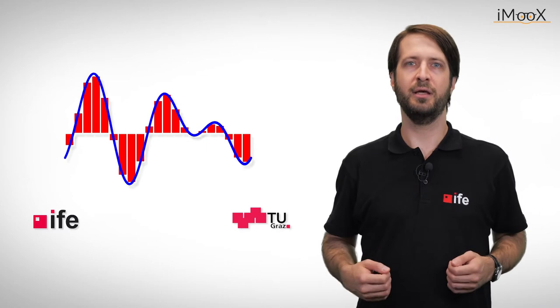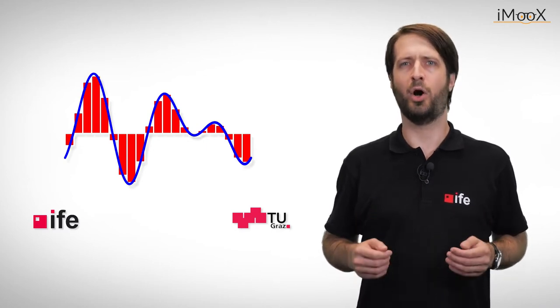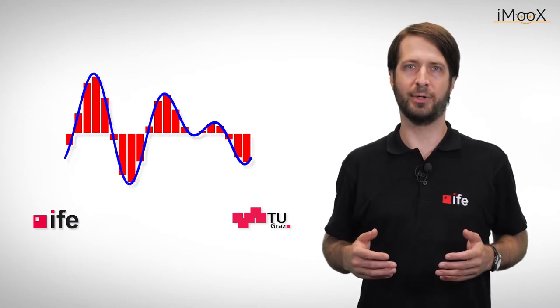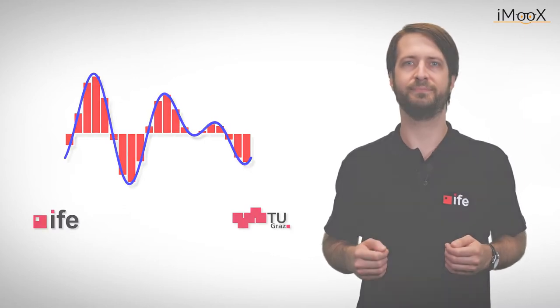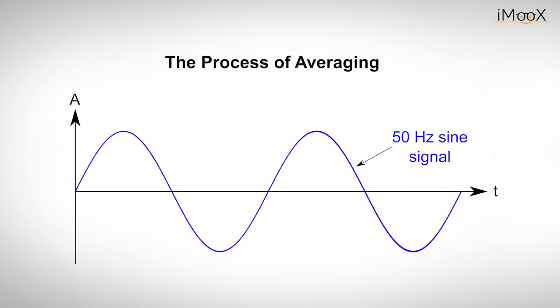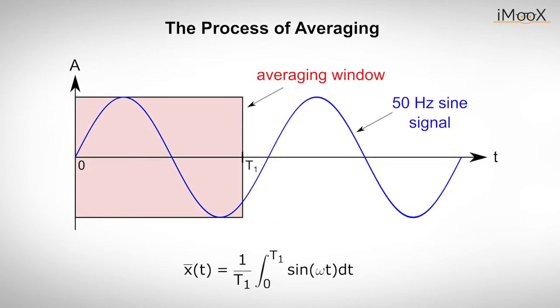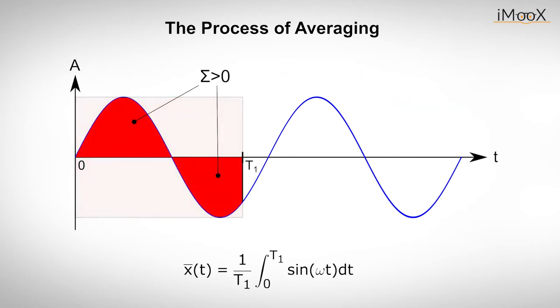To understand how this is done, we need to know that integrating ADCs always average the input signal for a fixed time interval for each individual measurement. So let's take a closer look on how averaging works. Let us assume that this sinusoidal signal at 50 Hz is our input signal. We can now freely choose our averaging window. If we set it between 0 and T1 and calculate the mean value, this mathematically corresponds to the integration of the sine function between the two time intervals. Graphically, the integral is simply the sum of the areas of the positive half wave minus the sum of the areas of the negative half wave between the time instant 0 and T1.